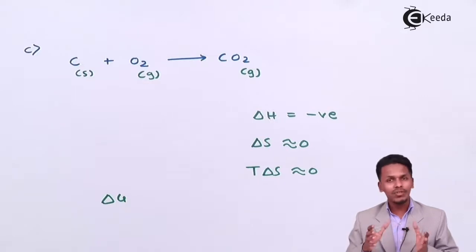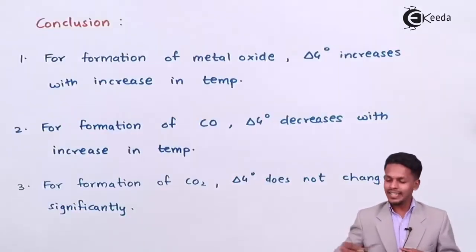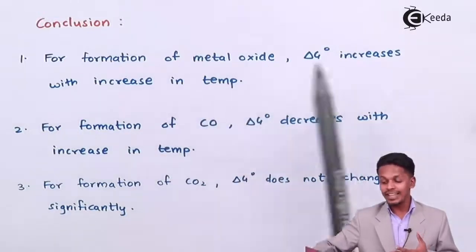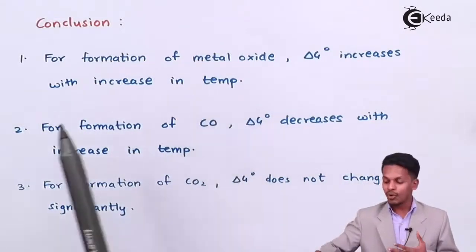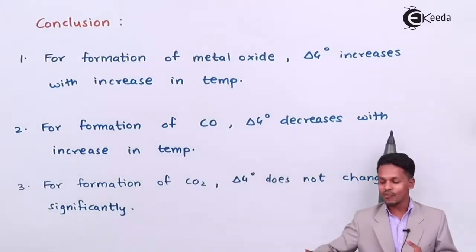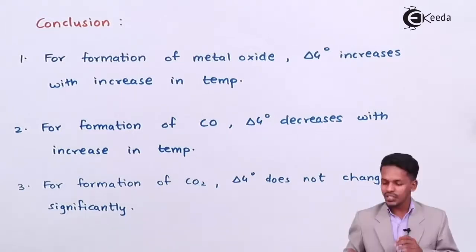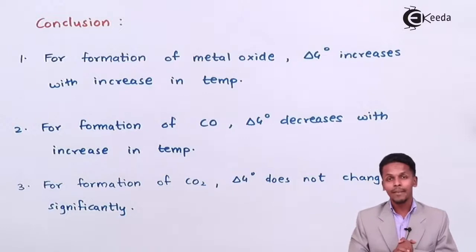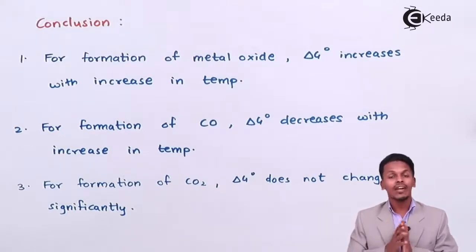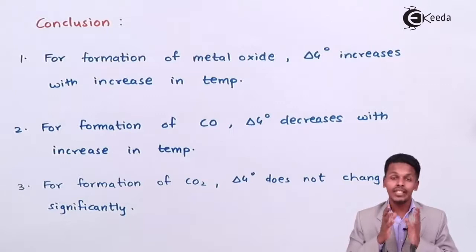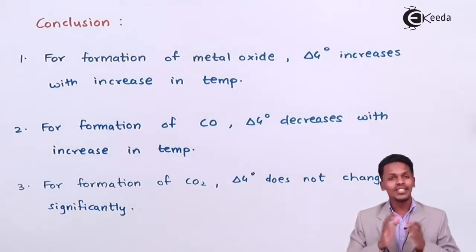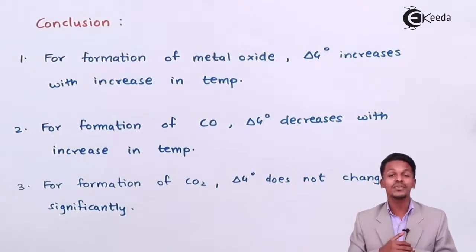These are the three conditions discussed. The conclusions are: for the formation of metal oxide, delta G° increases with increase in temperature; for the formation of carbon monoxide, delta G° decreases with increase in temperature; and for the formation of carbon dioxide, delta G° does not change significantly with change in temperature. This thermodynamic study plays a vital role in understanding which metal can form metal oxide and which metal can be reduced easily depending on the choice of reducing agent.